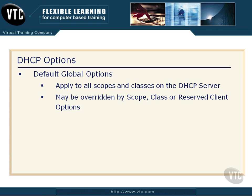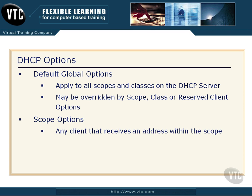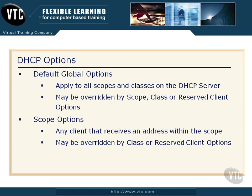If I provide option information at the default global level, keep in mind I can apply different options at the scope, class, or reserved client option level, and they will override the global options. The farther we go down the ladder, they can override the option just above them. A scope option is going to be applied to any client that receives an address within that particular scope, and those can be overridden by class or reserved client options.